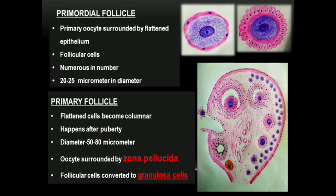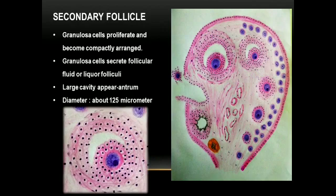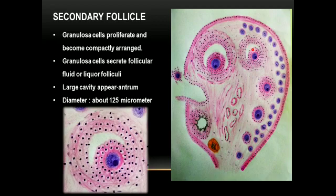The follicular cells convert into granulosa cells, which proliferate and form multiple compact layers. The granulosa cells then start to secrete follicular fluid called liquor folliculi. A large fluid-filled cavity forms within the follicle, called the antrum or antral cavity. At this secondary follicle stage, the diameter further increases to around 125 micrometers.